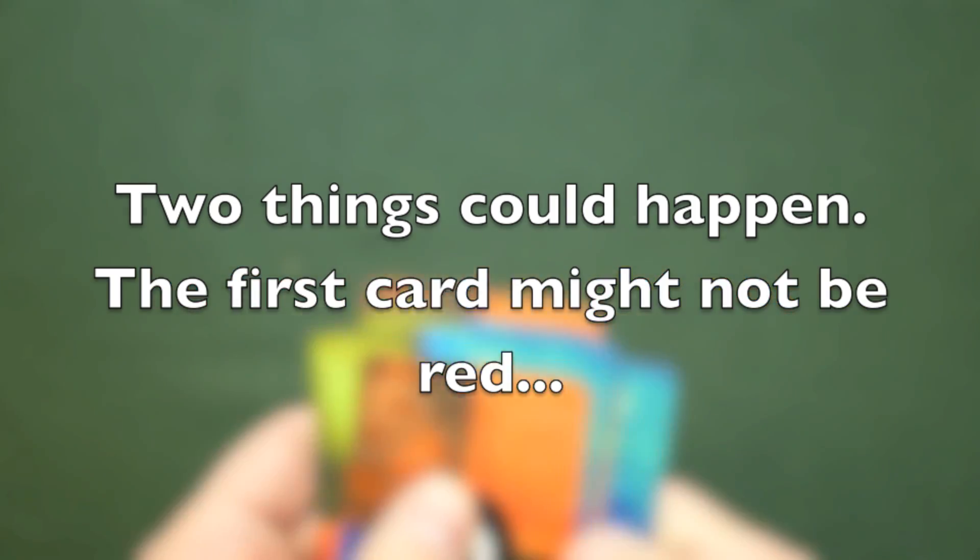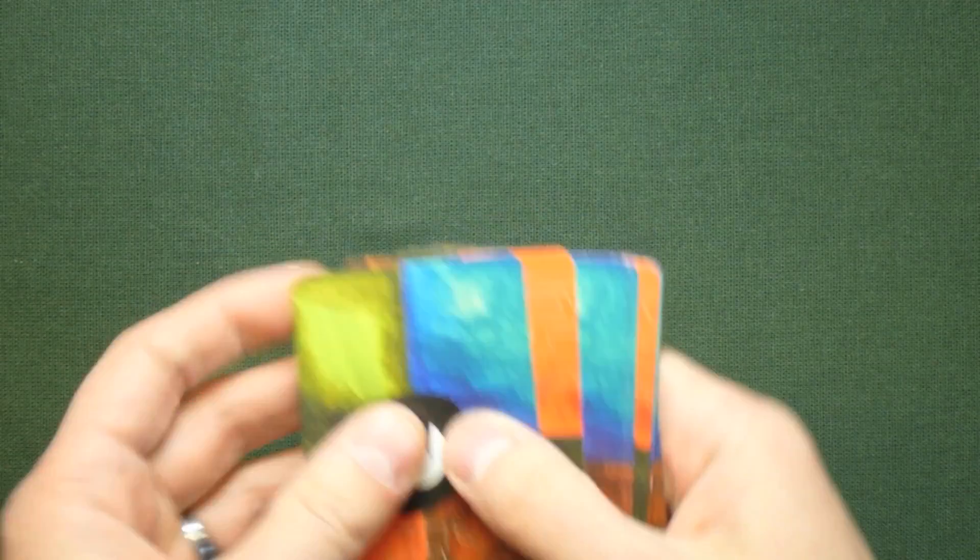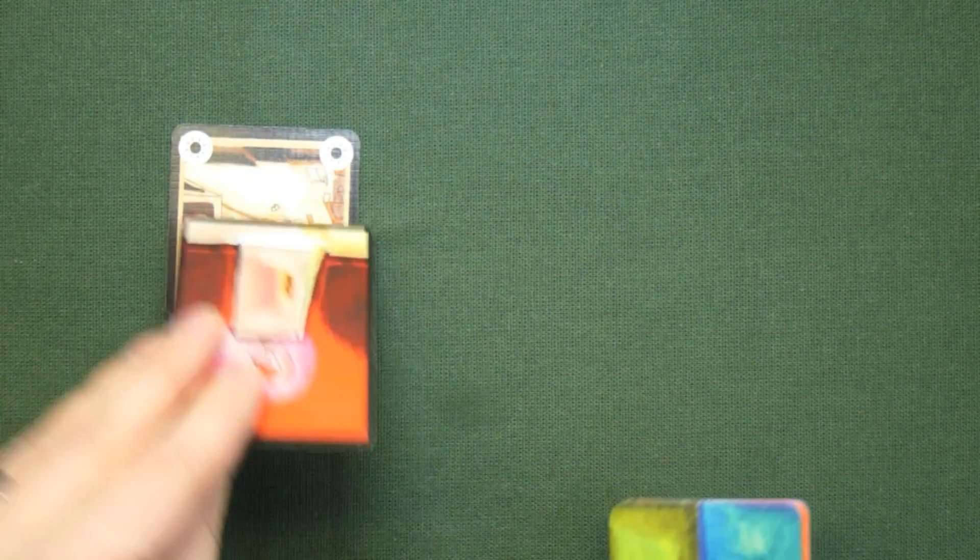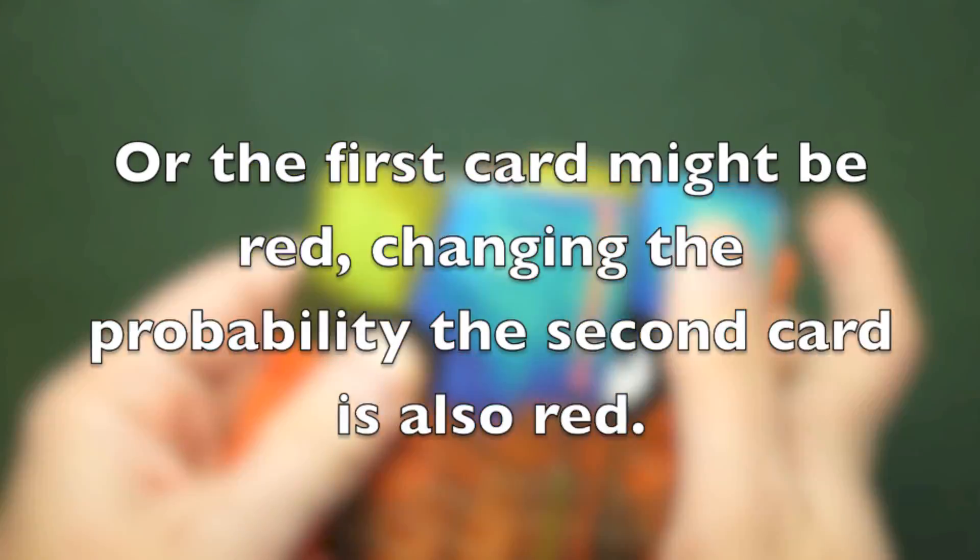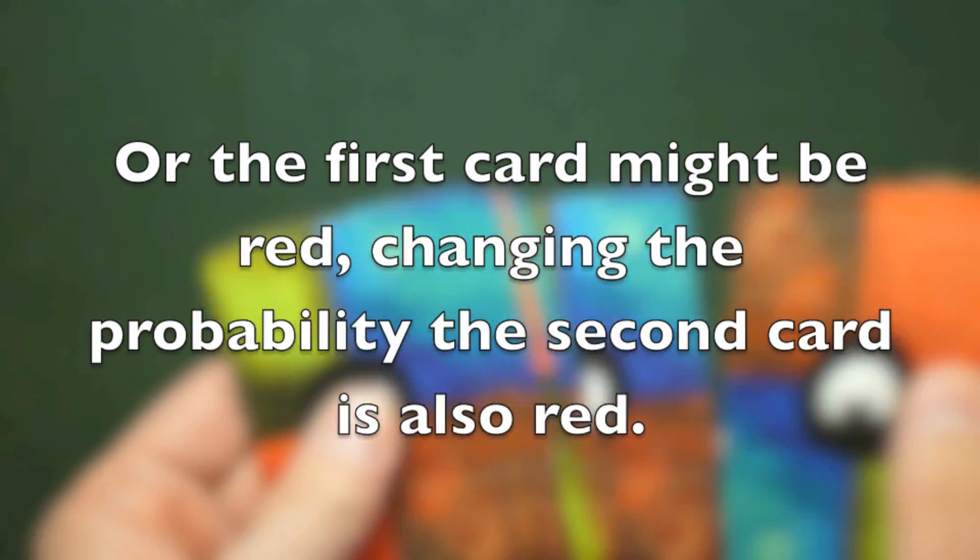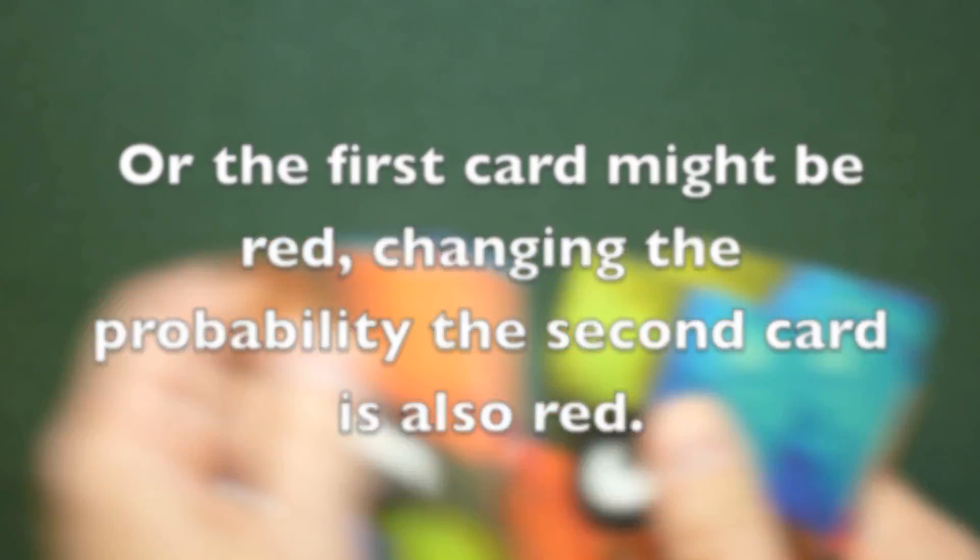The first card may not be red. In this case, the probability that the second card is red will be something we can figure out. It's possible that the first card could have been red, though, and that'll change the probability that the second card is also red.